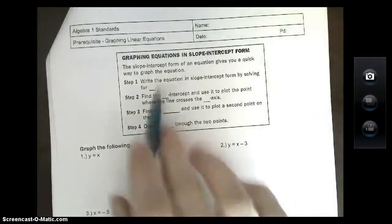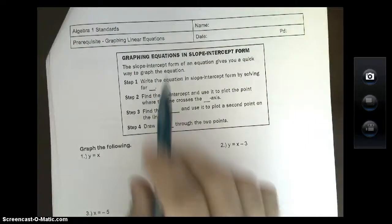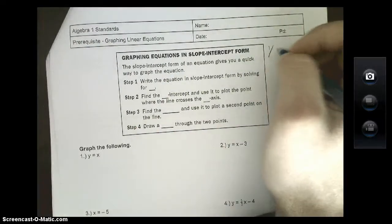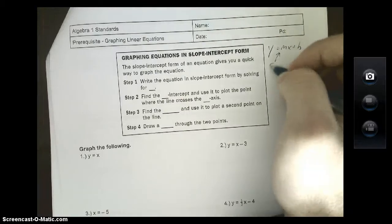I'm going to show you a general description, show the first example, and then show you how you can use your calculator to help you out as well. Graphing equations in slope-intercept form. When we say slope-intercept form, we're referring to y equals mx plus b, where m is your slope and b is your y-intercept.